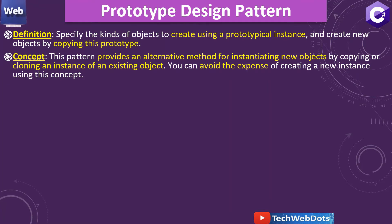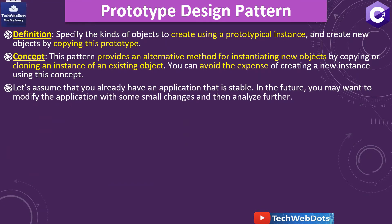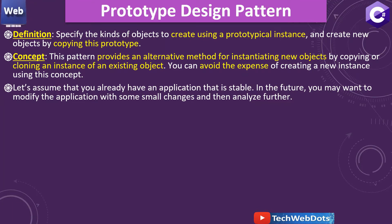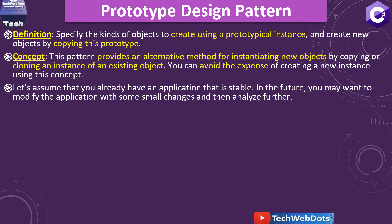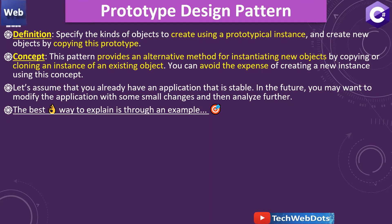We create new objects by copying this prototype. This pattern provides an alternative method for instantiating new objects by copying or cloning an instance of an existing object. You can avoid the expense of creating new instances using this concept. For example, if you already have a stable application and want to make small changes, you obviously won't recreate the whole application — you'll clone it and perform a few modifications, and if everything works fine, you'll merge. That's the concept of the prototype design pattern.